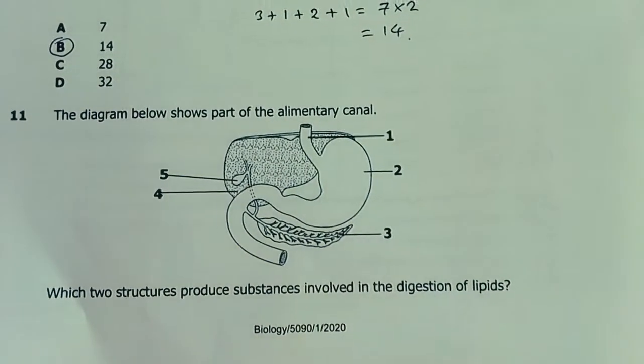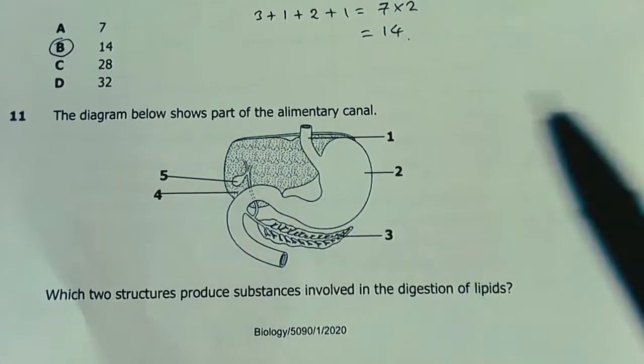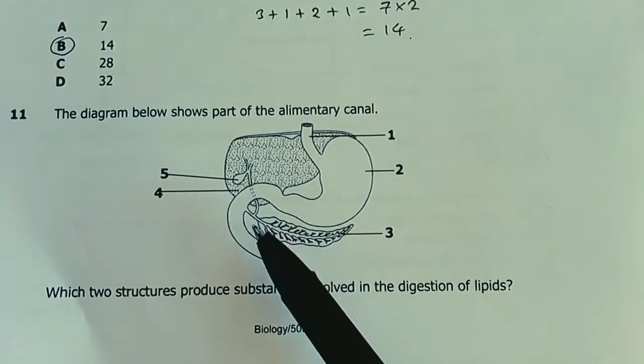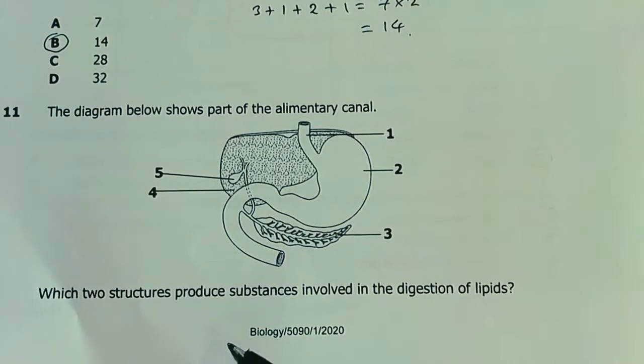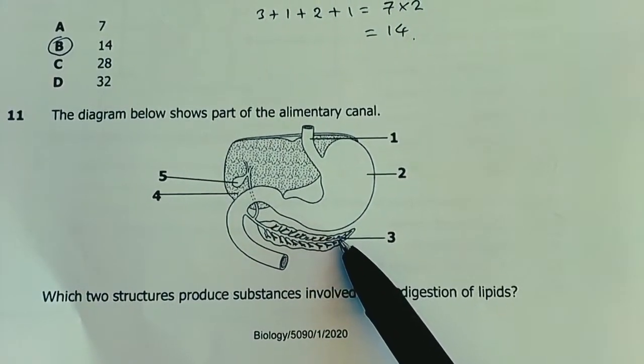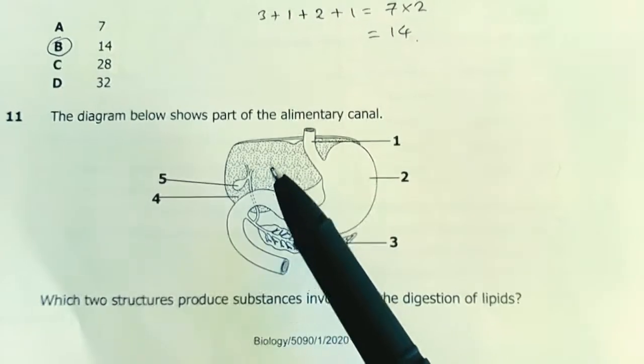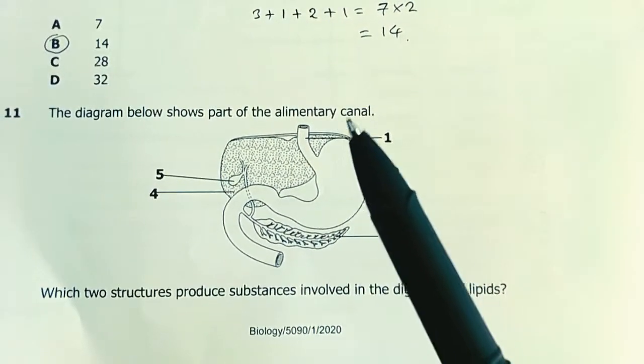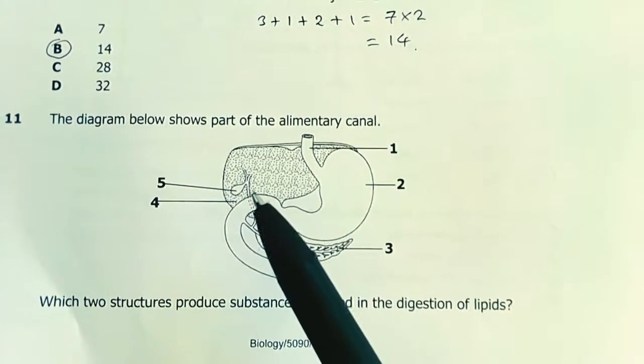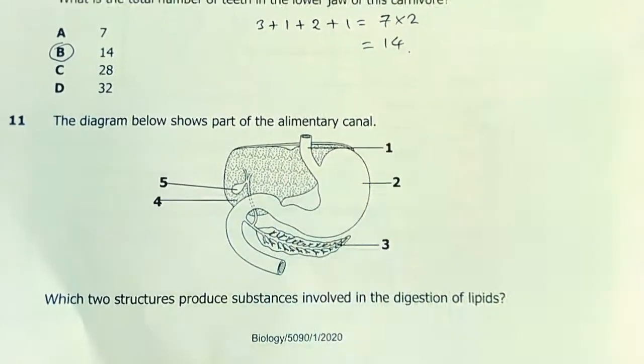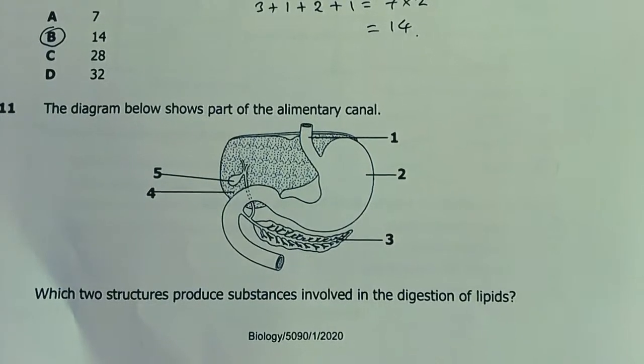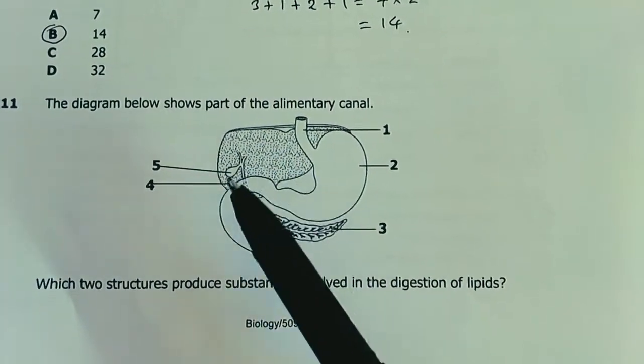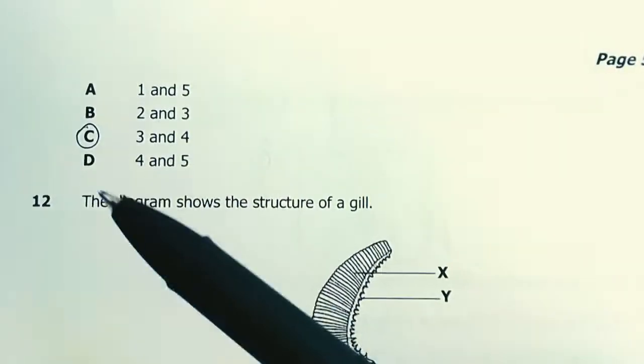Number 11. The diagram shows part of the alimentary canal: liver, esophagus, stomach, pancreas, duodenum, gallbladder, and the ducts. Which two structures produce substances involved in digestion of lipids? There's pancreatic lipase, which is part of pancreatic juice, so 3 is one. Then bile comes from the liver. The liver produces bile from destruction of old red blood cells. Bile has sodium salts which are basic and emulsify lipids, bringing about physical digestion. After physical digestion, lipase from the pancreas breaks them down chemically. The gallbladder is just storage. The liver produces bile. So it's 4 and 3. The answer is C.